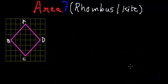Hi, today we are going to learn how to find the area of a rhombus. I have already drawn one rhombus on the grid, so before we start calculating the area of the rhombus, let us draw the diagonal AC.